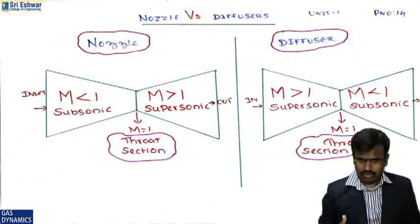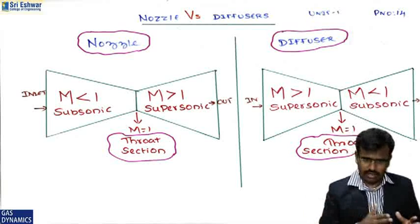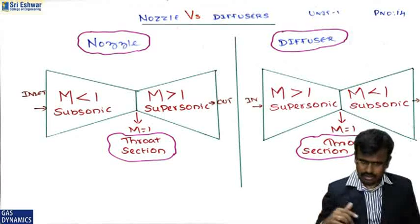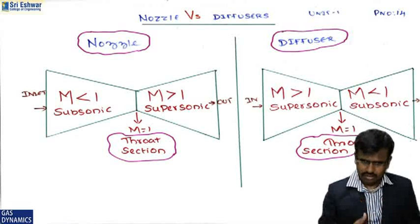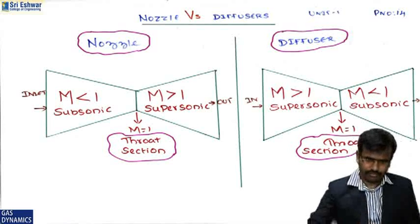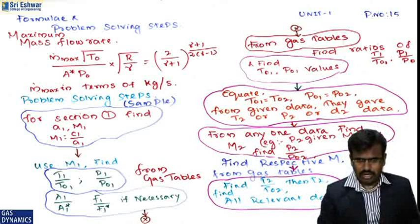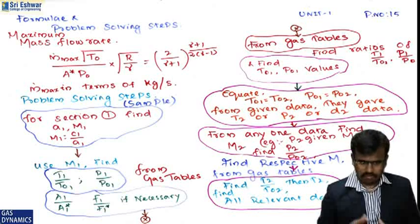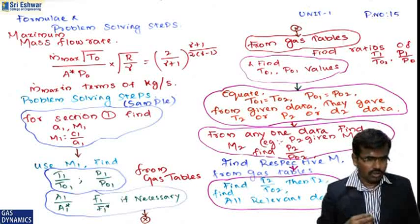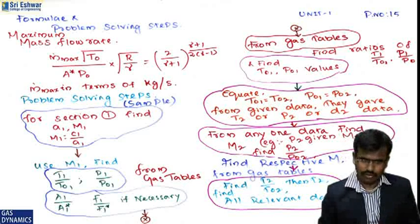Consolidating: the CD (convergent-divergent) nozzle has subsonic then supersonic flow. The diffuser has supersonic then subsonic flow. The center section (throat) has M = 1. The formula for maximum flow rate is: ṁ_max · √T₀ / (A* · p₀) · √(R/γ) = [2/(γ+1)]^((γ+1)/(2(γ−1))). ṁ_max is in kg/s.